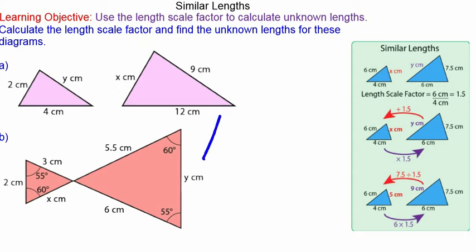For question B, the two triangles are similar because they share a vertically opposite angle and the alternate angles are also equal.